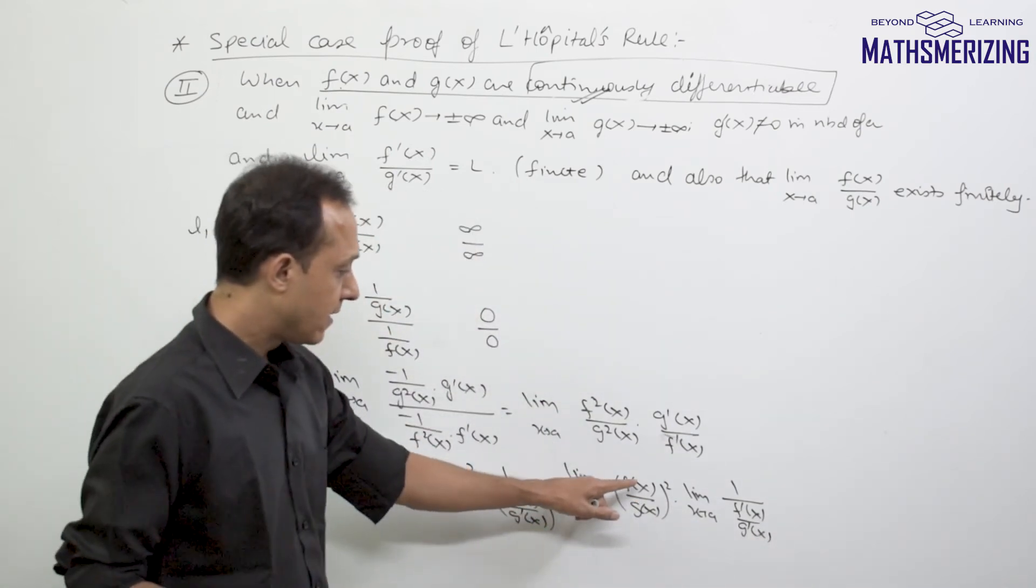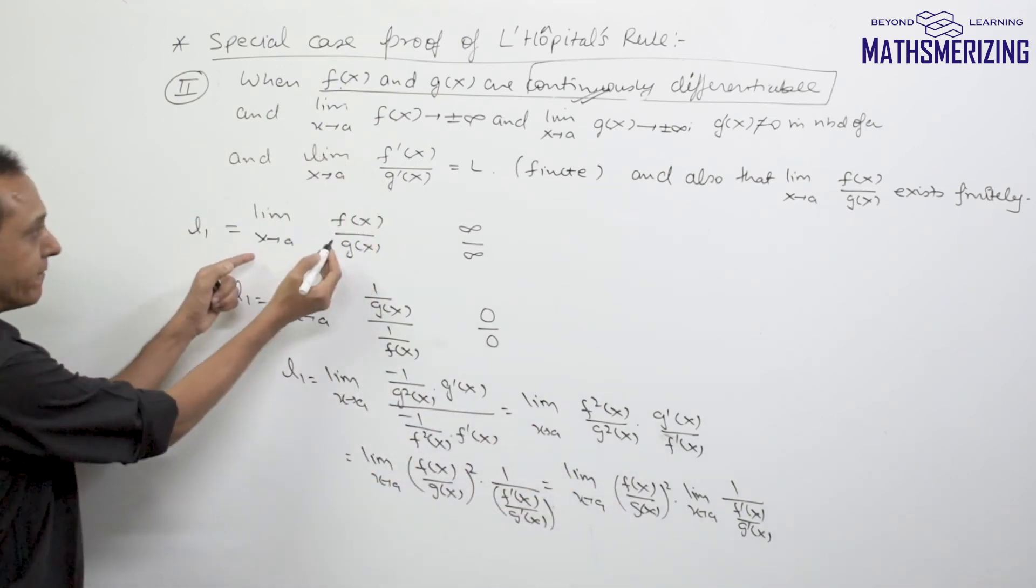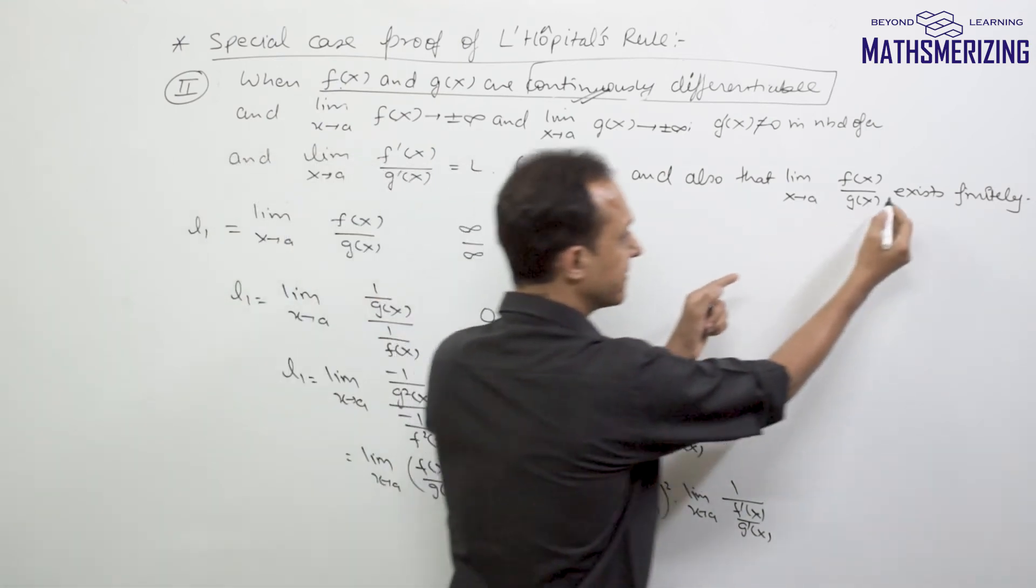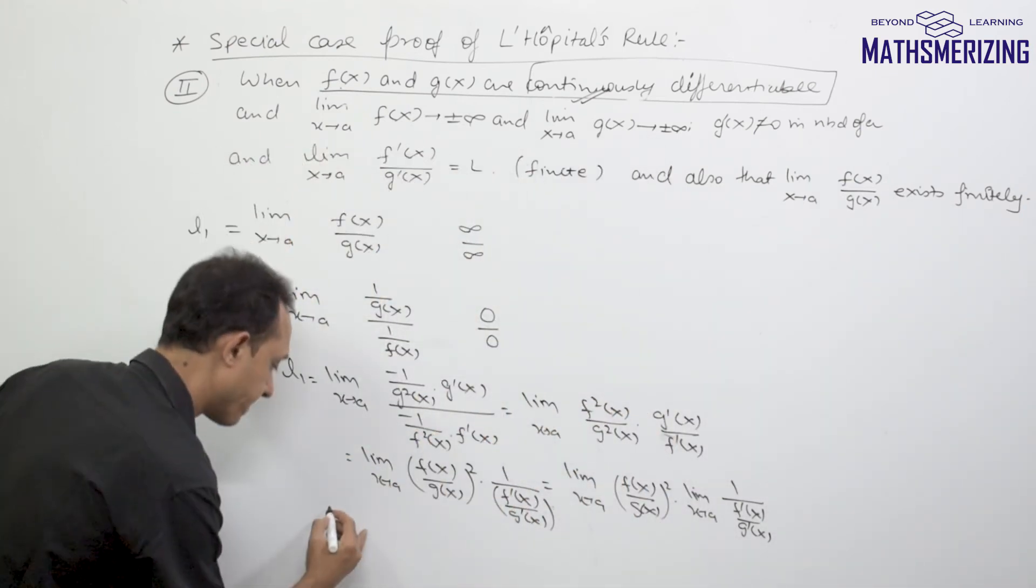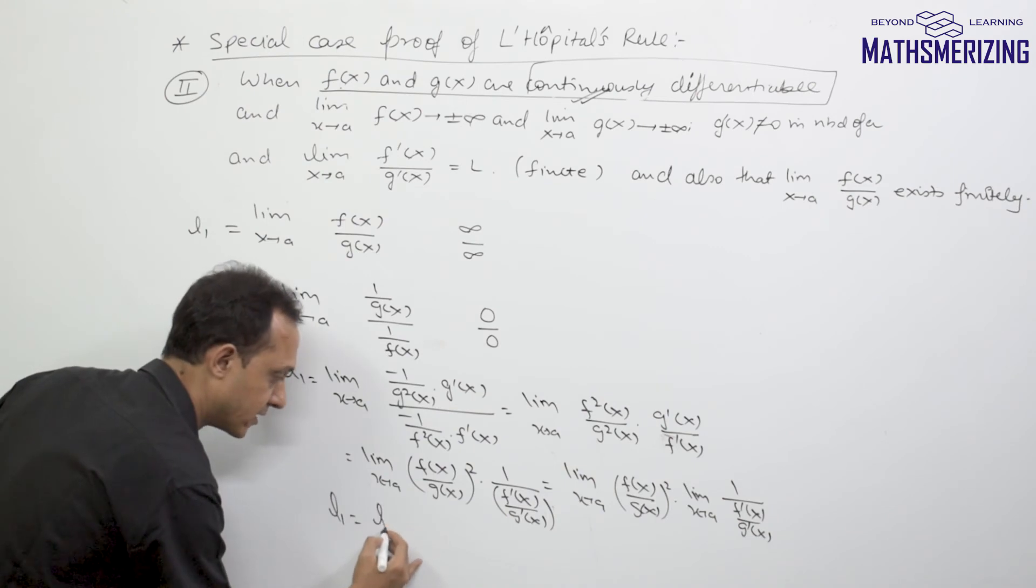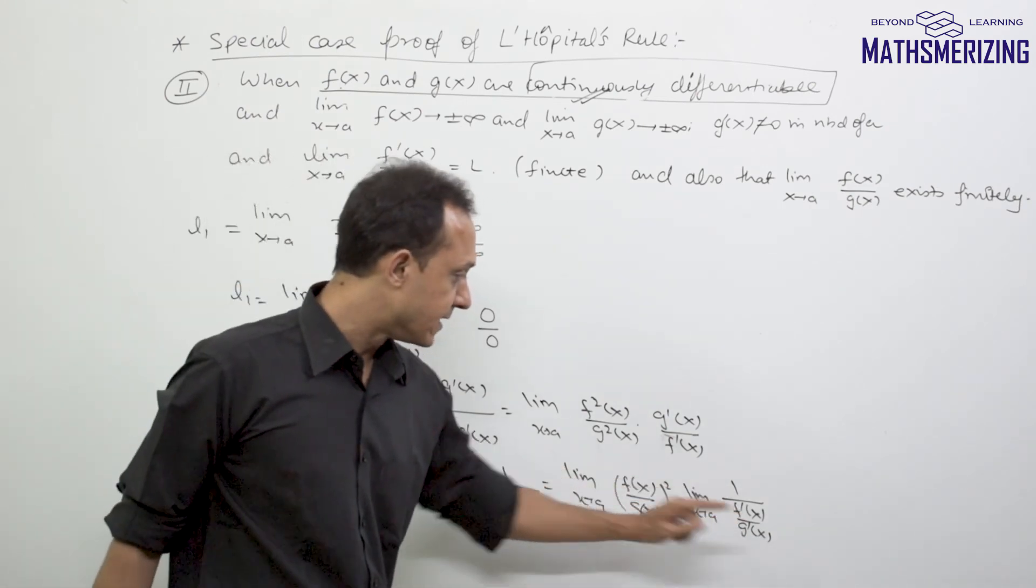Now we know that limit x tends to a of f(x) upon g(x) exists and we have assumed that it exists finitely and its value is L1. So I can write this limit as L1, and that should be equal to L1 square times 1 upon f'(x) upon g'(x).